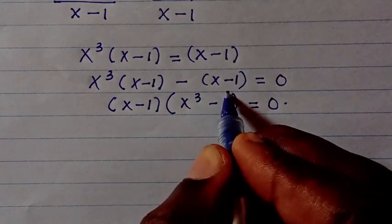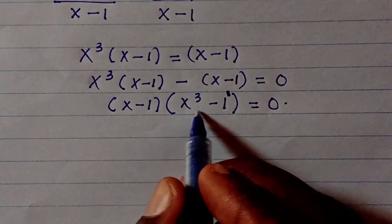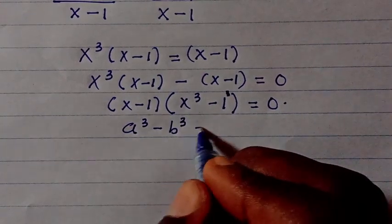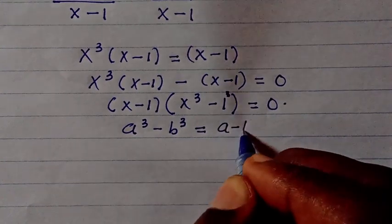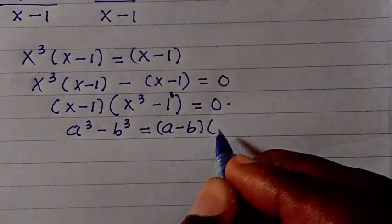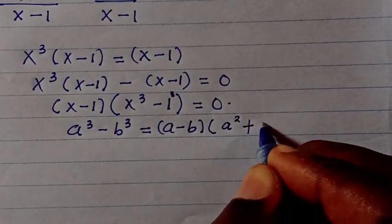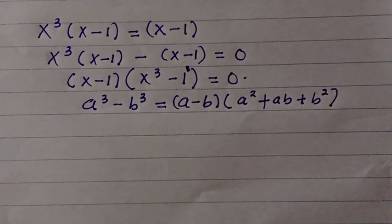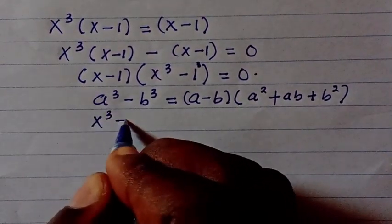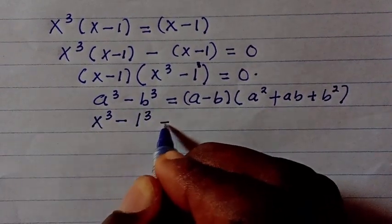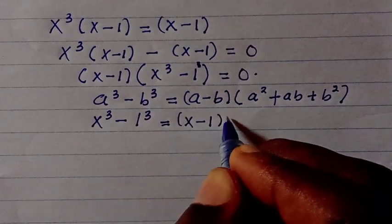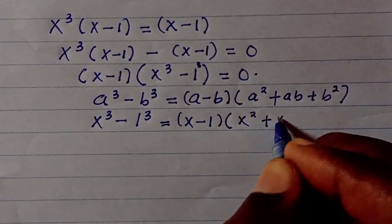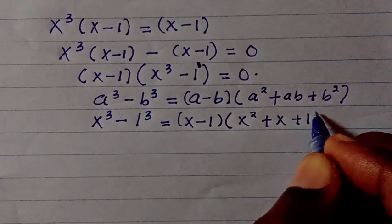So let's say we have this one raised to the power of 3 as well, and considering the identity a cubed minus b cubed — the difference of two cubes — this is equal to (a minus b) bracket (a squared plus ab plus b squared). So by relating it with this, we have x cubed minus 1 cubed equals (x minus 1)(x squared plus x plus 1), since 1 squared is still 1.